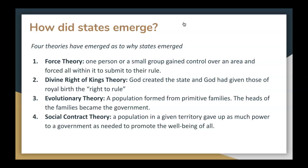Evolutionary theory: a population formed from primitive families, and the heads of those families became the government. This theory maintains that government came to be because certain families proved themselves capable of leading the masses around them. Social contract theory: a population in a given territory gave up as much power to a government as needed to promote the well-being of all. This refers to the phenomenon where people believe there needs to be some force that establishes and maintains rule and order, and so people recognize they need to be governed and are willing to sacrifice their autonomy to a greater force or authority.